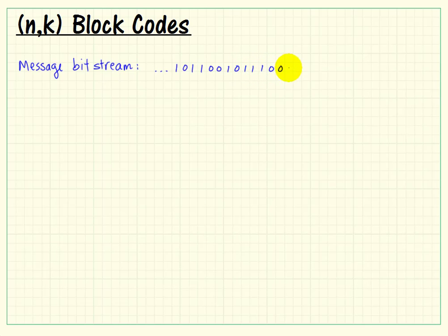I'll show a portion of that bitstream. An NK block code says take k bits out of that bitstream. So k we call our message length. We'll grab k bits, and for illustrative purposes here I'll say k is 4. And we then introduce some check bits into the stream where we say that overall we need to have a codeword length of value n. And n is going to be larger than k.